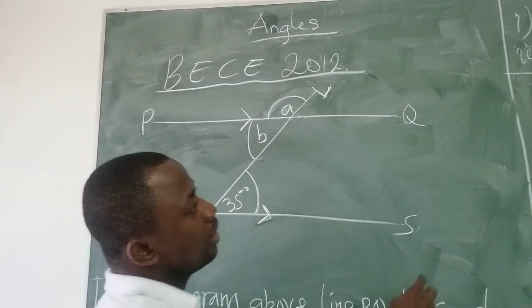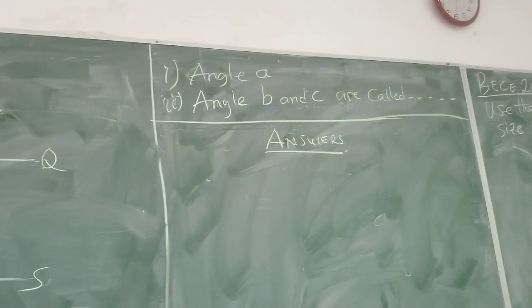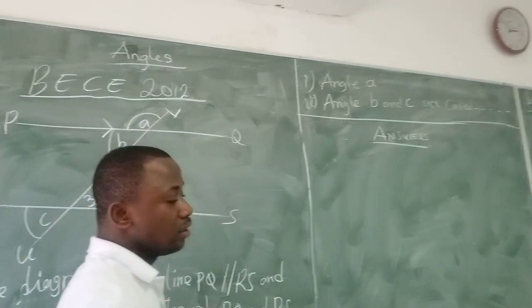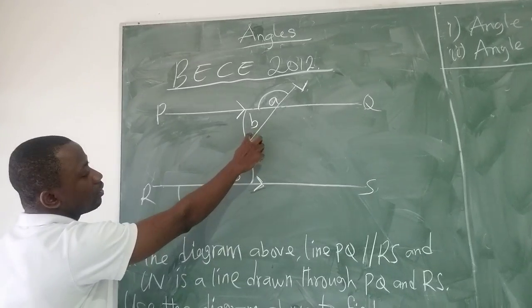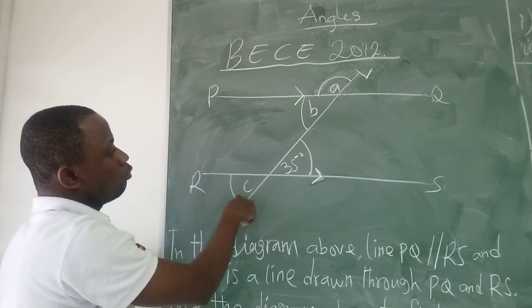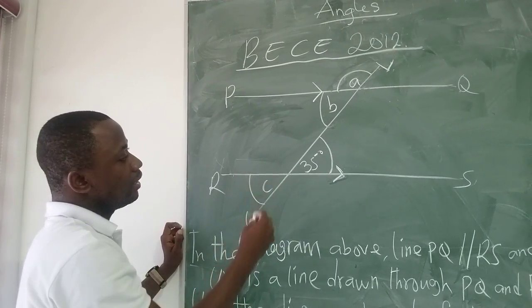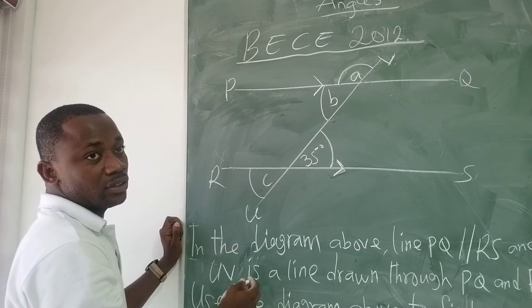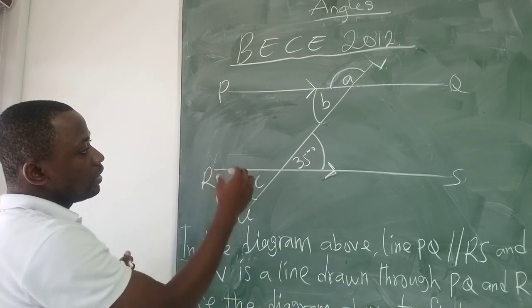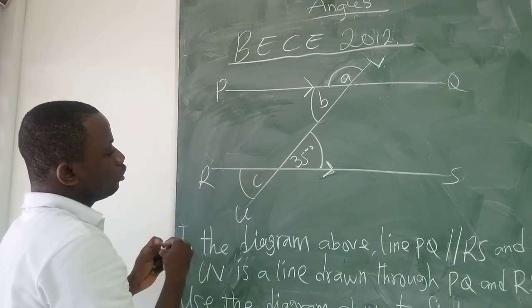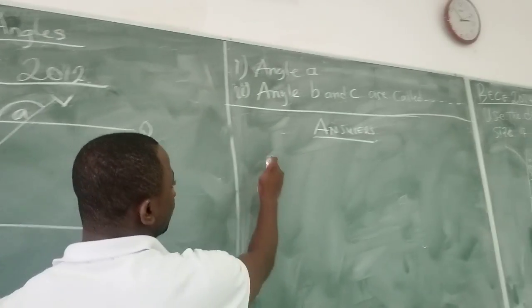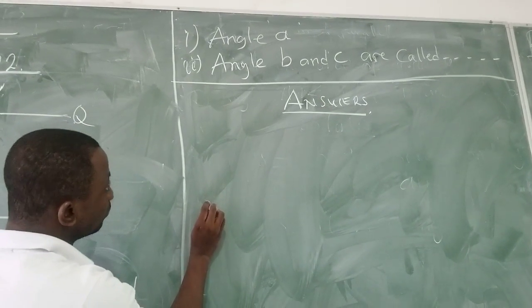We are asked to use the diagram above to find angle A. This is angle A. Angle B and C are also identified. So let me start from angle B and C. This is where we have angle B, and this is where we have angle C. We learned that a property of parallel lines is that of corresponding angles. These angles C and B are on the same relative position.